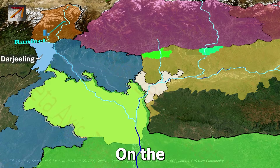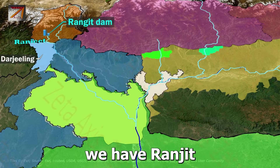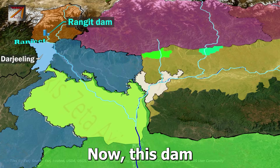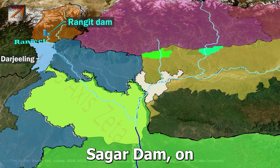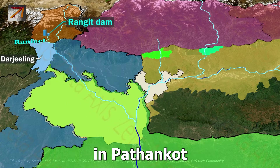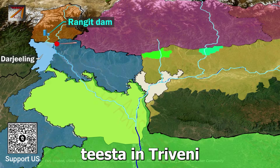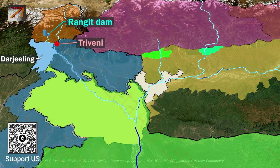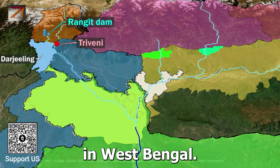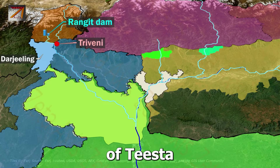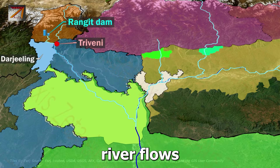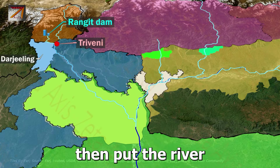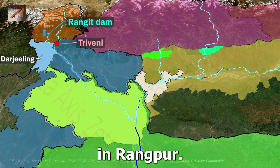On the Ranjit River, there is the Ranjit Dam in Sikkim — this is different from the Ranjit Sagar Dam on the Ravi River in Pathankot. The Ranjit River joins Tista at Tribeni in West Bengal. After the confluence of Tista and Ranjit, the Tista flows into Bangladesh and meets Brahmaputra in Rangpur.